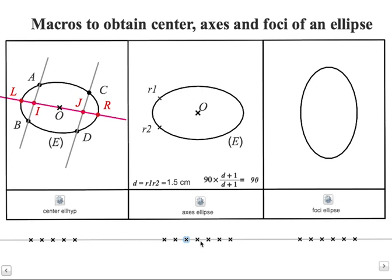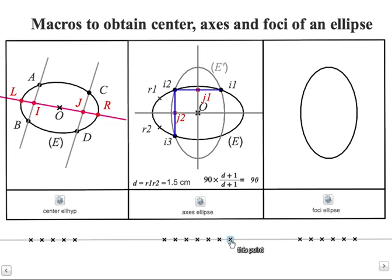So then we create the center using this macro, rotate the ellipse around O using this number 90 degrees, the intersection point, the three first intersection points, midpoints, perpendicular lines, so perpendicular bisectors of these two segments, and we get the axis.